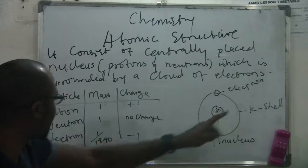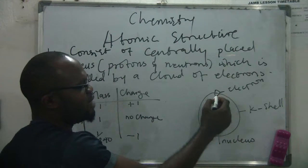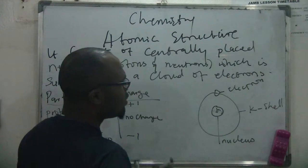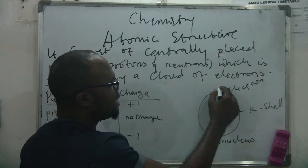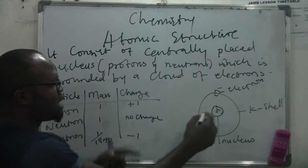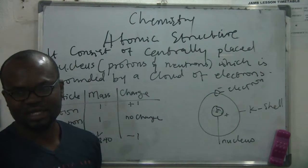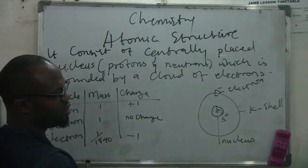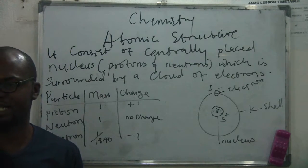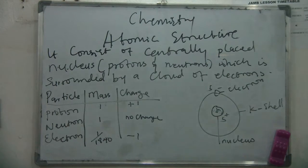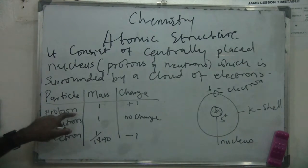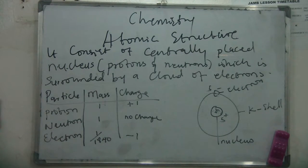Every atom has an equal number of electrons and protons. If this atom has one electron, it must have one proton. This is to ensure the electrical neutrality of an atom. Electrons are minus, protons are plus. If this atom has an atomic number of five, there are five protons and five electrons, so the charge is neutral — five positive and five negative cancel out. That is why every atom is neutral.